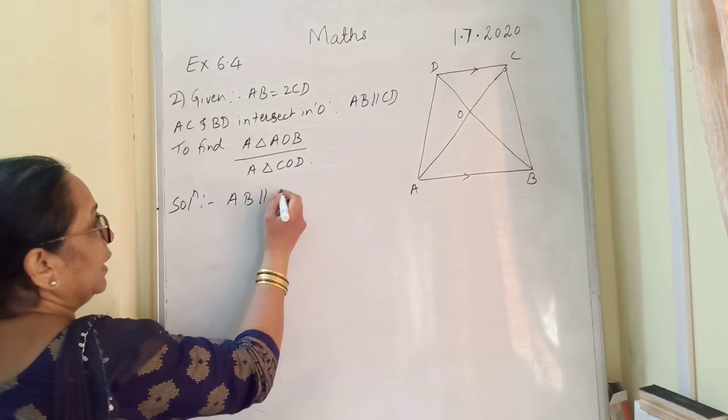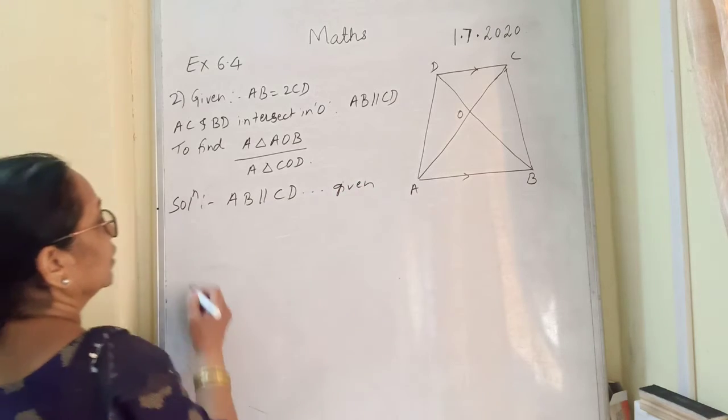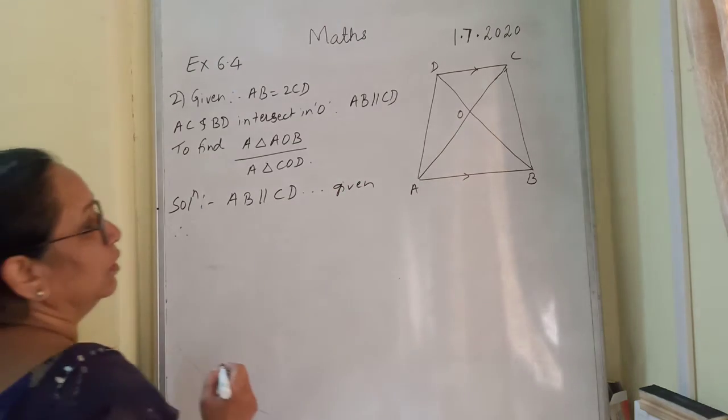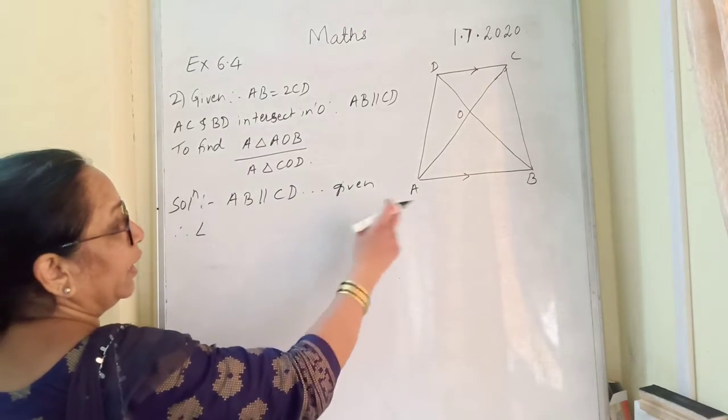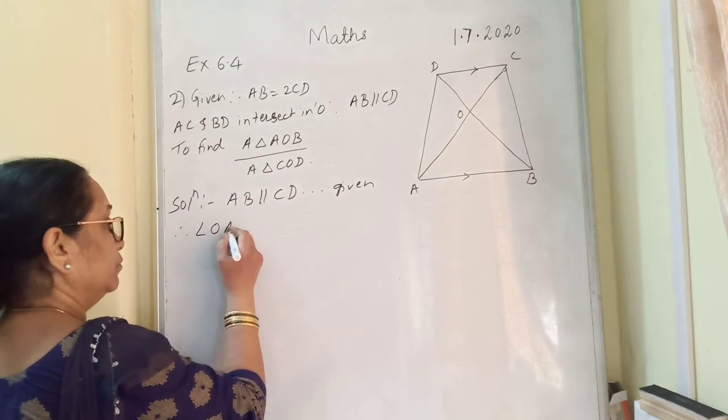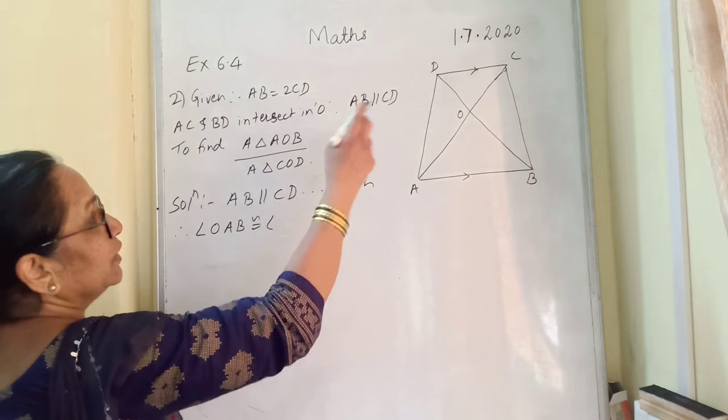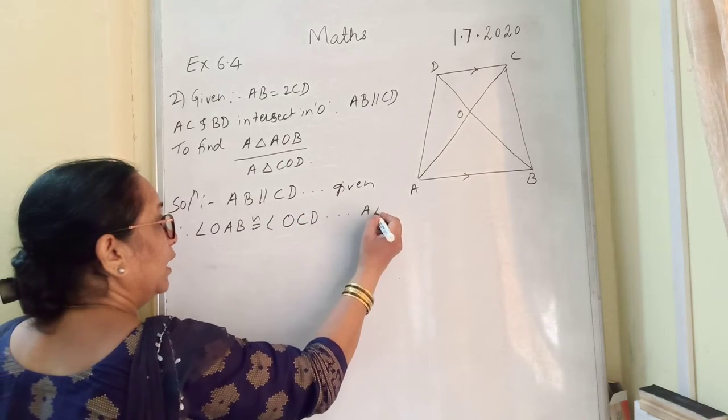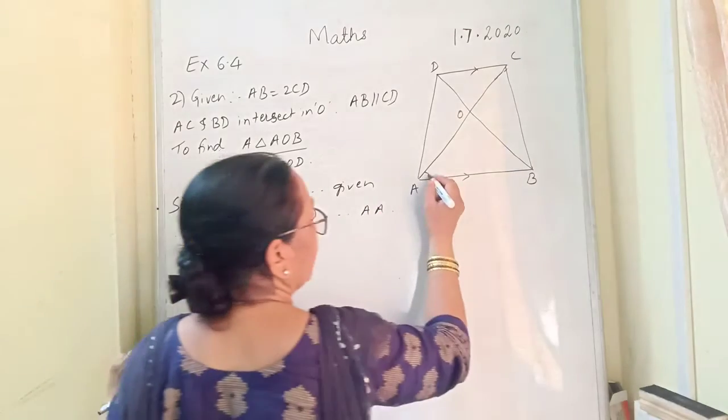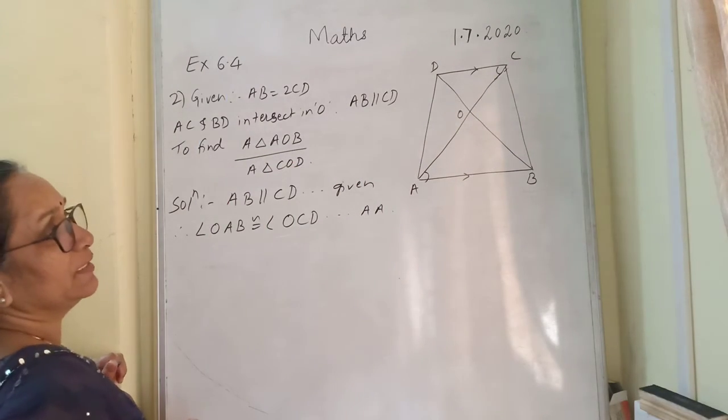AB is parallel with CD, this is given to us. Therefore, angle OAB is congruent with angle OCD. These two are alternate angles, this one and this one. It is making the figure Z.